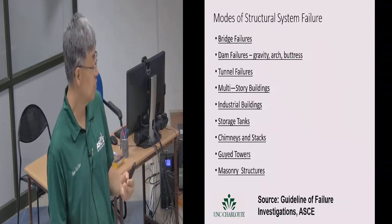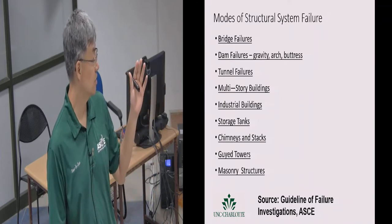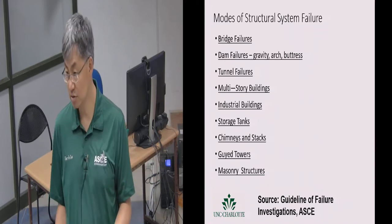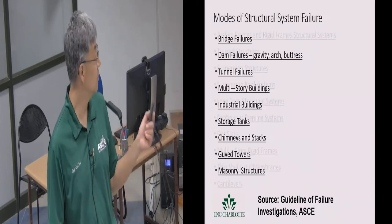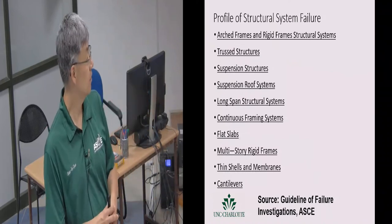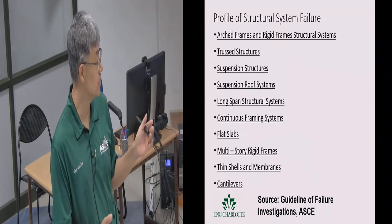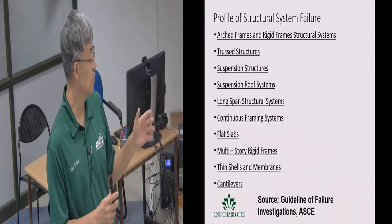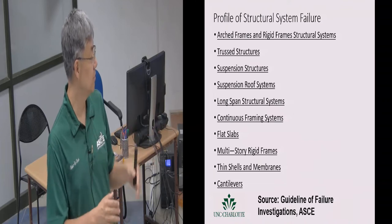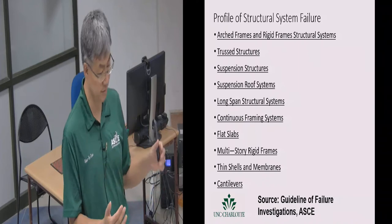So most of the time they are doing facade and building envelope failures. That is right now one of the most critical elements, because with climate change we have more strong winds, rains, and floods. The building envelope actually has more failures. That is why we are interested in what happened in India, because you have more structural system failures. Unless you have failures, you cannot learn from failure. Some common modes of system failures are: bridge, dam, tunnels, multi-story buildings, single-story buildings, industrial buildings, storage tanks, chimneys, guided towers, masonry structures.